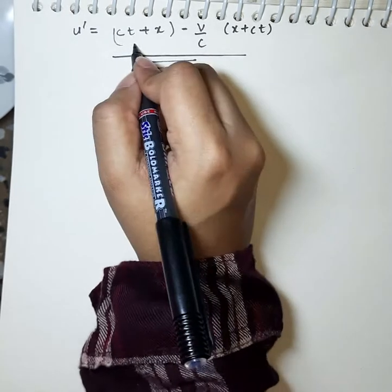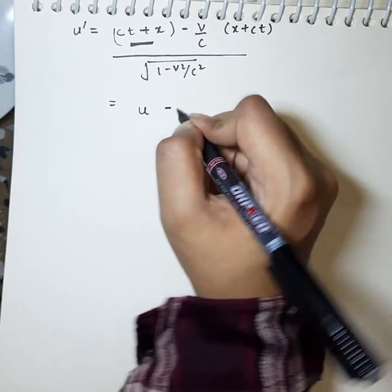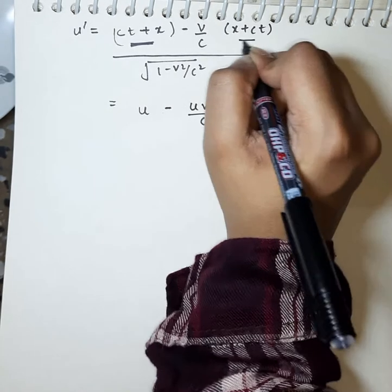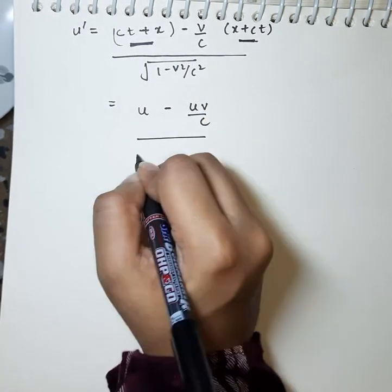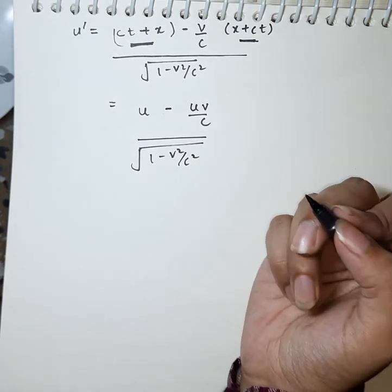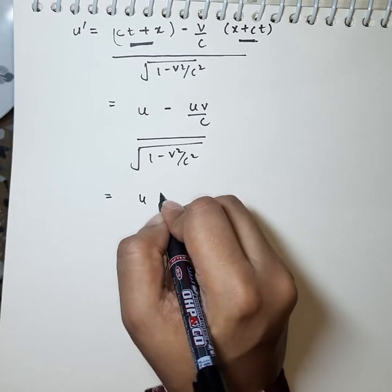Now what can we write? The question already gives u, so this is u minus uv by c. This part is u under root 1 minus v square by c square, and this will give u.